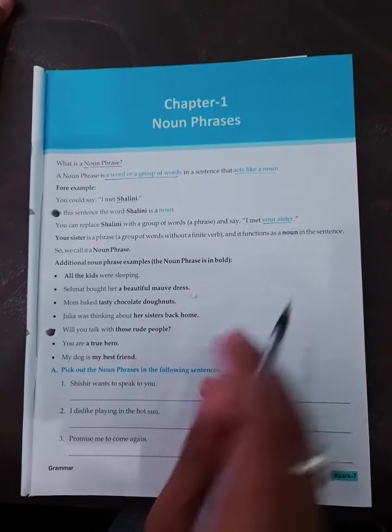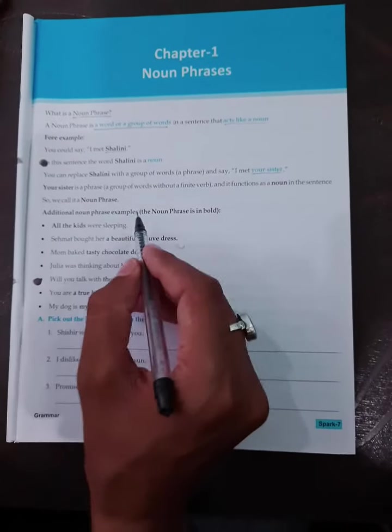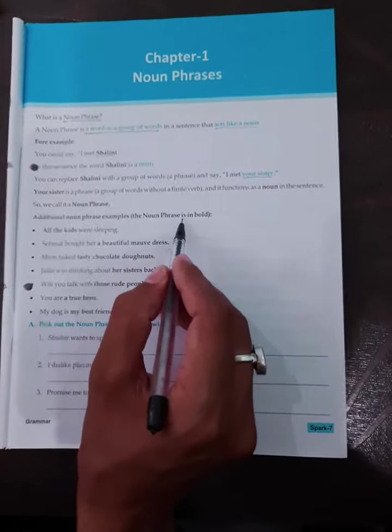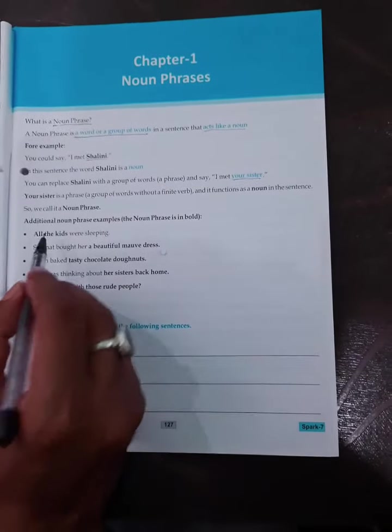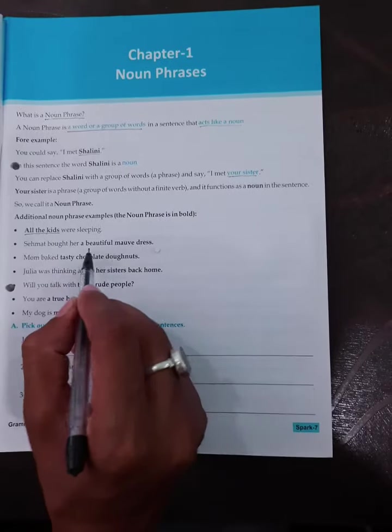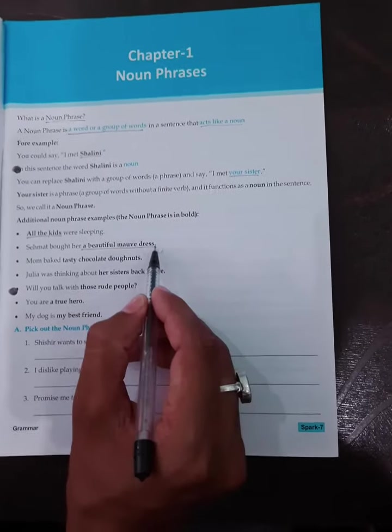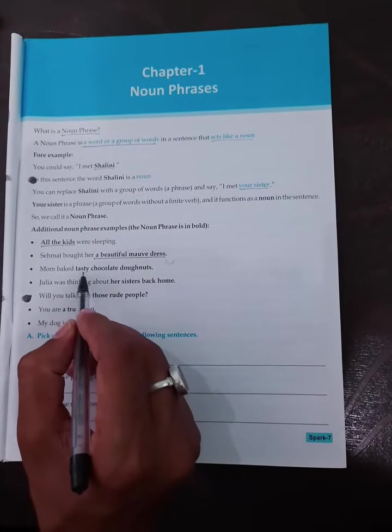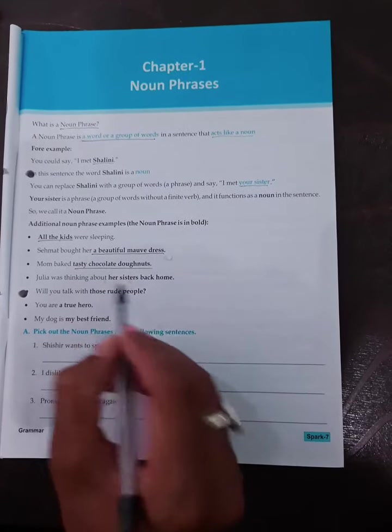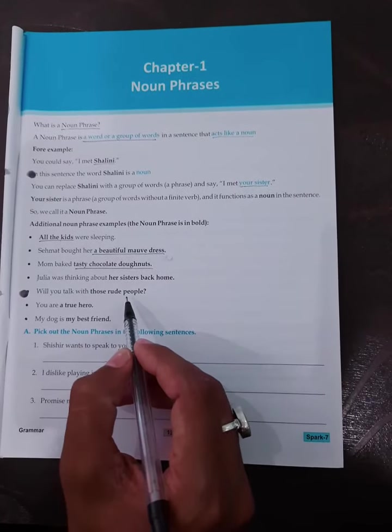Your sister is a phrase. Additional noun phrase examples - the noun phrase is in bold. All the kids, beautiful mauve dress, tasty chocolate doughnuts, her sisters back home. These are words that make noun phrases.